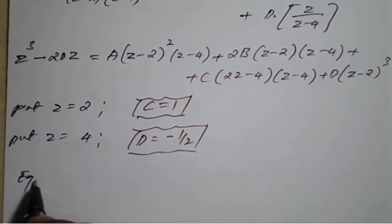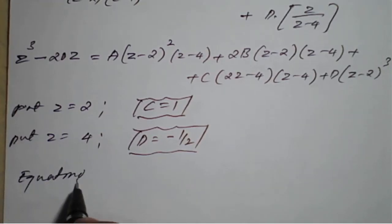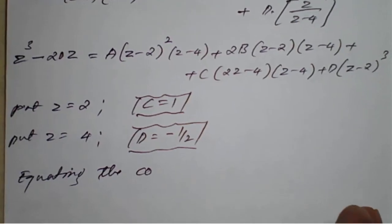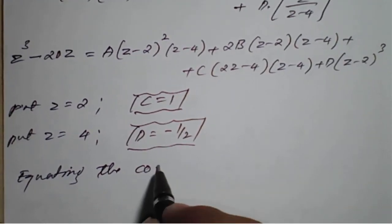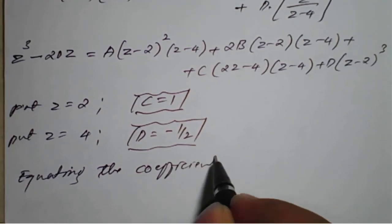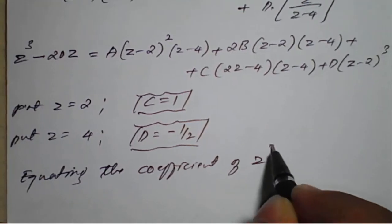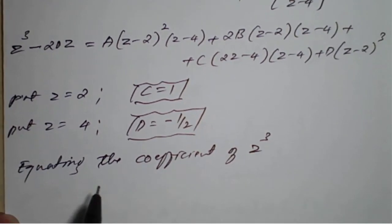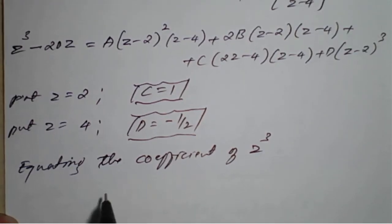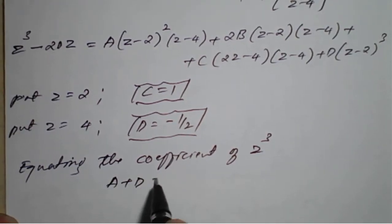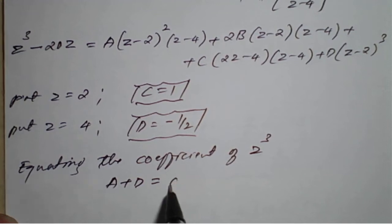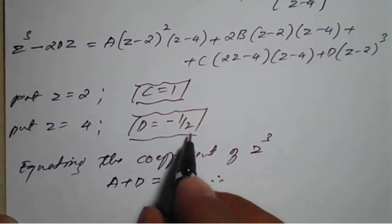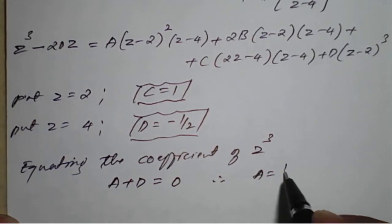Equating coefficients of Z³ on both sides gives the equation A + D = 0. Since D = -1/2, therefore A = 1/2.